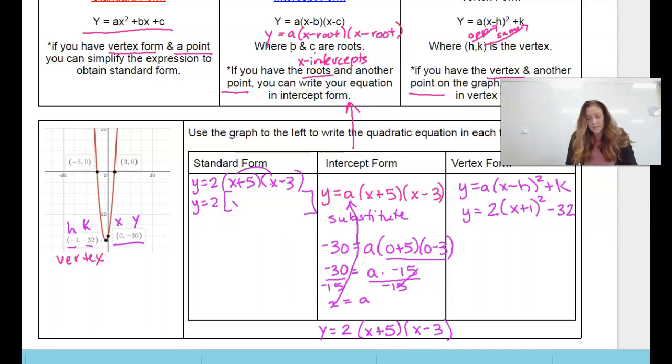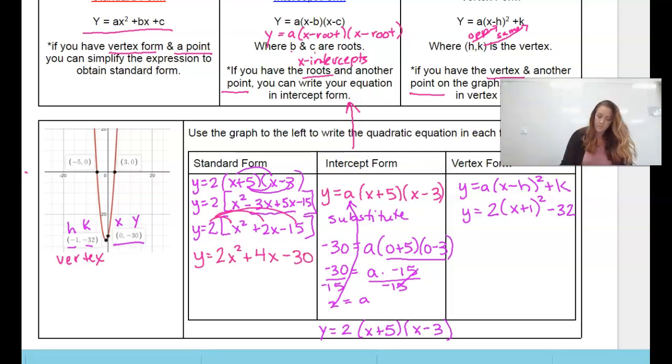So x times x, x times negative 3, positive 5 times x, and positive 5 times negative 3. So when you multiply two factors, you should get four terms inside. So we're going to combine like terms. I still have that two because we haven't used it yet. But we can combine these x's. So x squared, negative 3 plus 5 is positive 2, minus 15. So our last step is to actually distribute the two. So y equals 2x squared plus 4x minus 30.